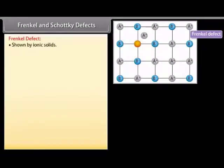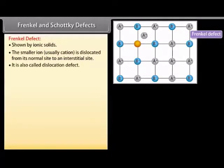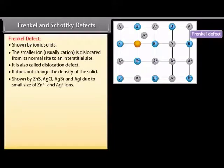Frenkel defect is shown by ionic solids. The smaller ion, usually the cation, is dislocated from its normal site to an interstitial site. It is also called dislocation defect. It does not change the density of the solid. Shown by ZnS, AgCl, AgBr, and AgI, due to the small size of Zn²⁺ and Ag⁺ ions.